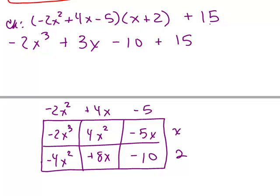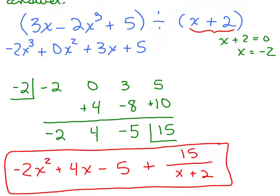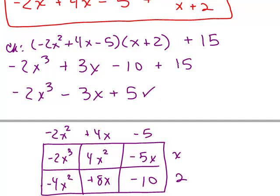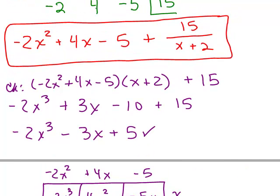But then, we have to remember to add on our remainder over here of 15. So that gives me negative 2X cubed minus 3X plus 5. And if that's what we divided by, then our check works. So negative 2X cubed minus 3X plus 5 was right here. See that minus 2X cubed plus 3X plus 5. So that all checked out. And that is our answer. Negative 2X squared plus 4X minus 5 plus 15 over X plus 2.